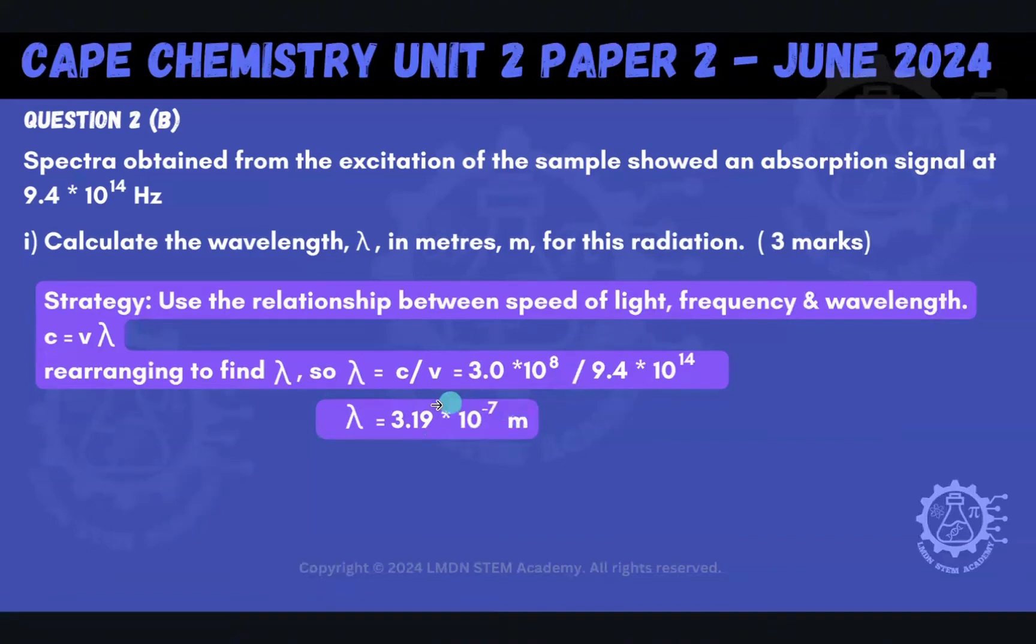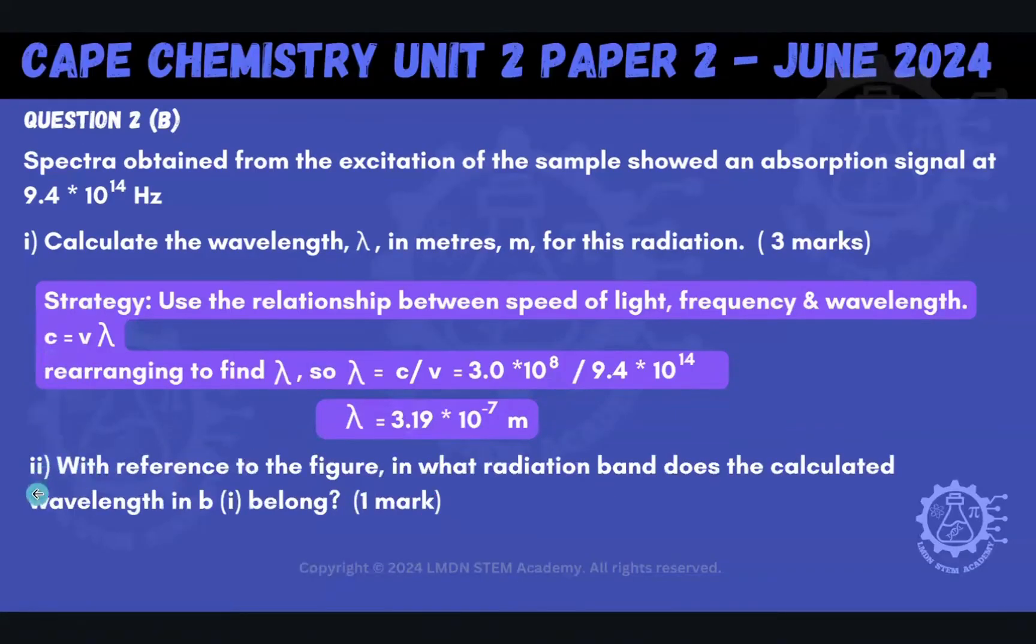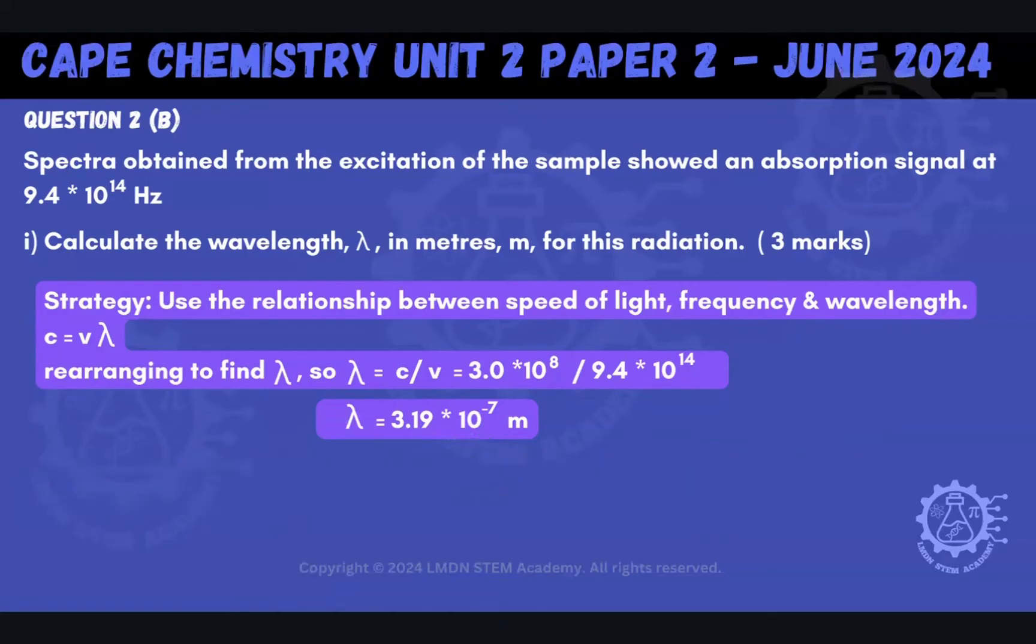So that's what we end up with here. And so the next question asks, B part 2 says, with reference to the figure, in what radiation band does the calculated wavelength in B part 1 belong? So where does this belong? We see it's on the order of 10 to the minus 7, and so it's 3.19 times 10 to the minus 7. So let's look back at our figure for a bit.